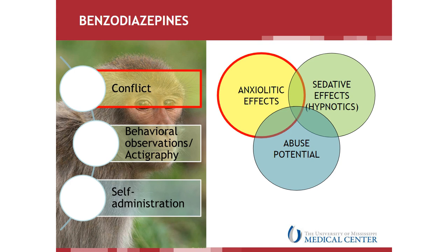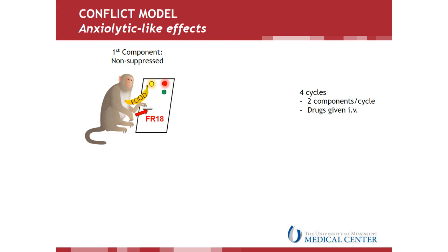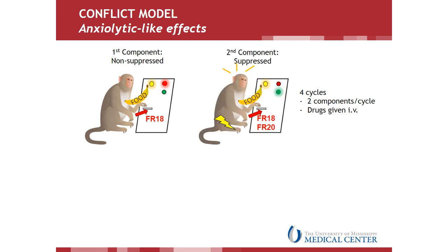Starting with the conflict model, which is used to measure the anxiolytic-like effects of benzodiazepines. In this model, animals are trained to respond for food delivery under two distinct components, and responding in one of the components is suppressed by the presentation of a punishment. During a non-suppressed component, completion of a response requirement of 18 lever presses leads to the presentation of a food pellet associated with a red light. During a separate component, the same response requirement leads to food delivery associated with a green light; however, a concurrent schedule of food-shock delivery is present under a fixed ratio 20 schedule. Once the animals learn that responding under the green light component will result in food shocks, they basically stop responding under that component, which is now called a suppressed component.